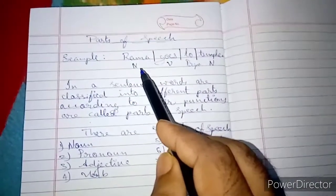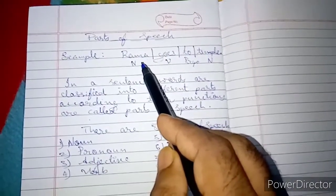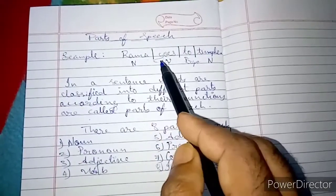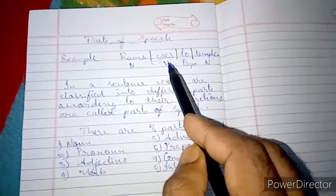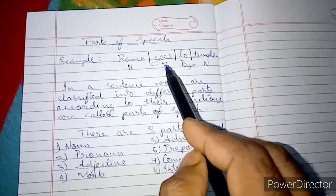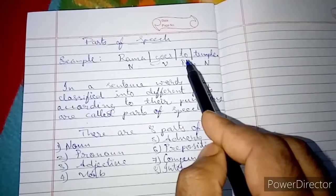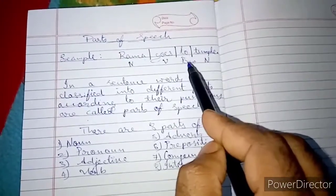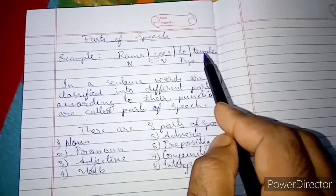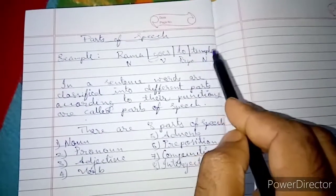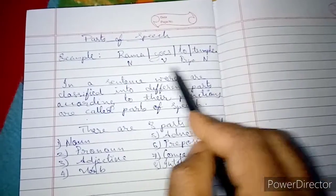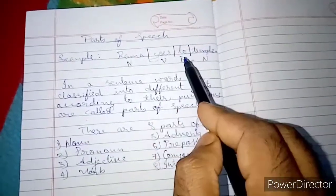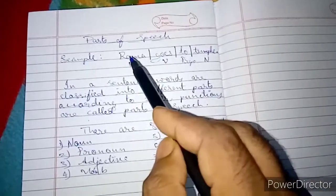See how they are classified. Rama — it is a noun, means name of a person. So that is called a noun. Next, goes — it is an action, so it is called a verb. Next, to — here it is a preposition. Next, temple — it is also a name of place, so it is called a noun here. Like this, words are classified according to their functions.